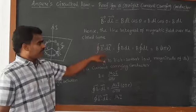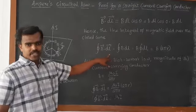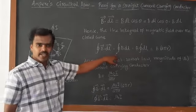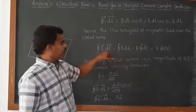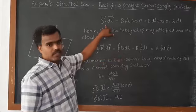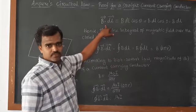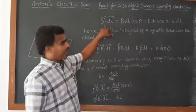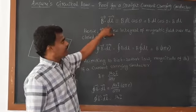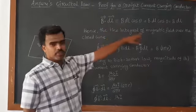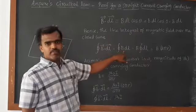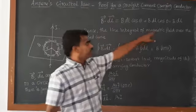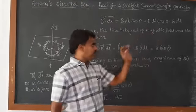We want to find the integral over the entire circle. So the line integral of B-vector dot dL-vector is equal to the line integral of B dL, because we have shown that B-vector dot dL-vector equals B dL. So instead of the dot product, we can write B dL using this result.